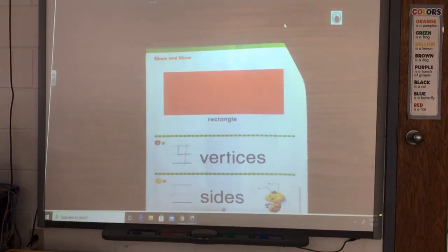They also want to know how many sides a rectangle has. We know it has four sides: one, two, three, four. So it has four sides and four vertices. Same number.